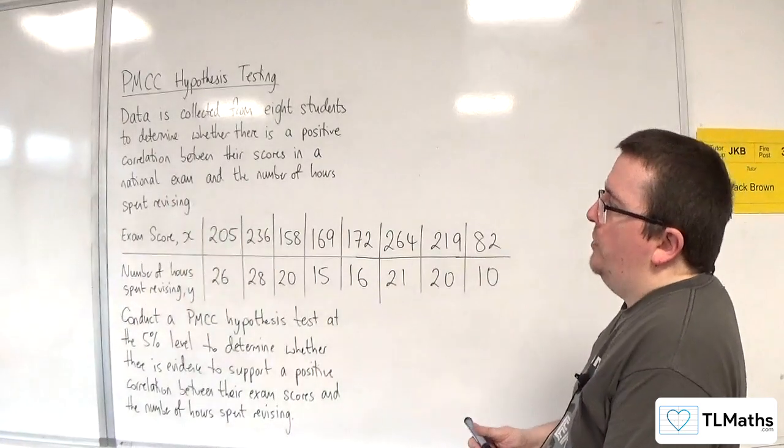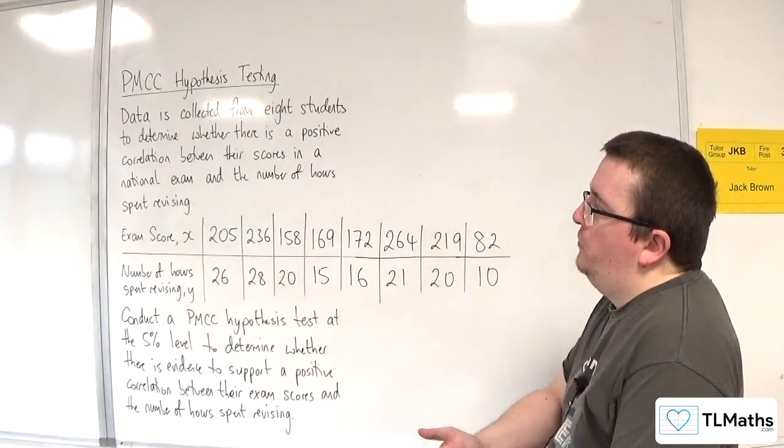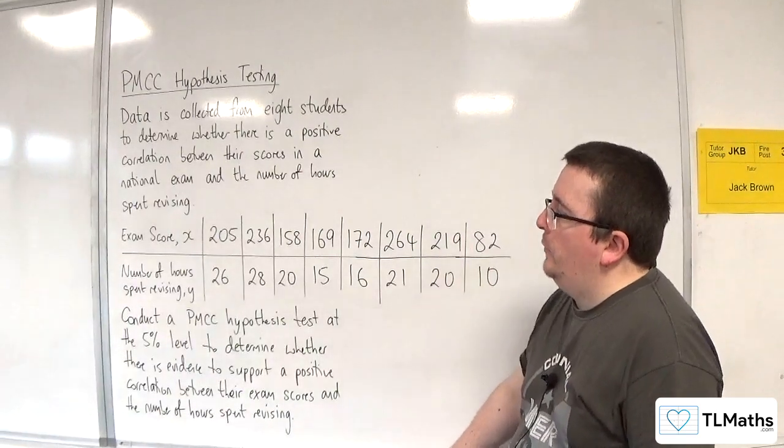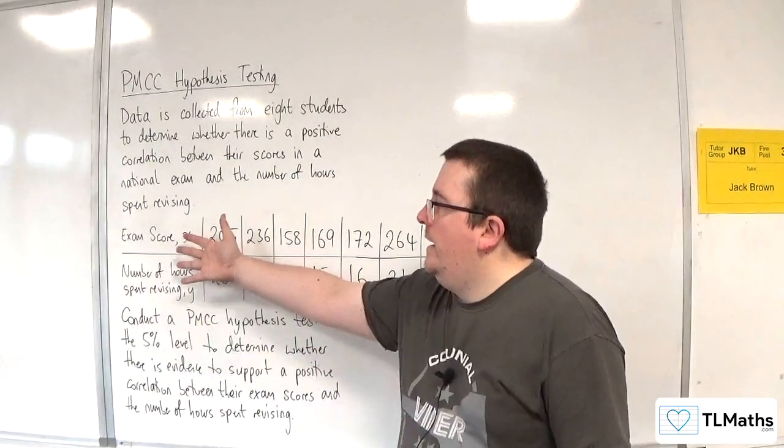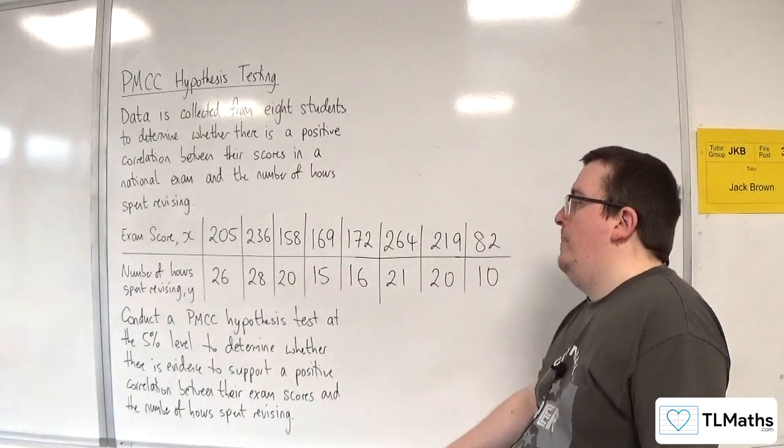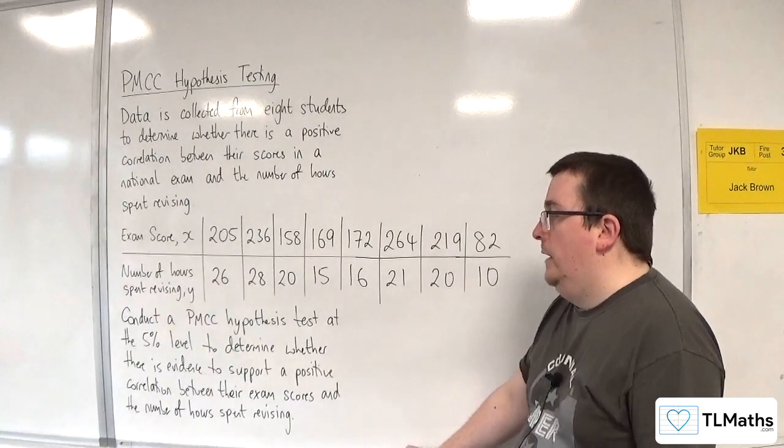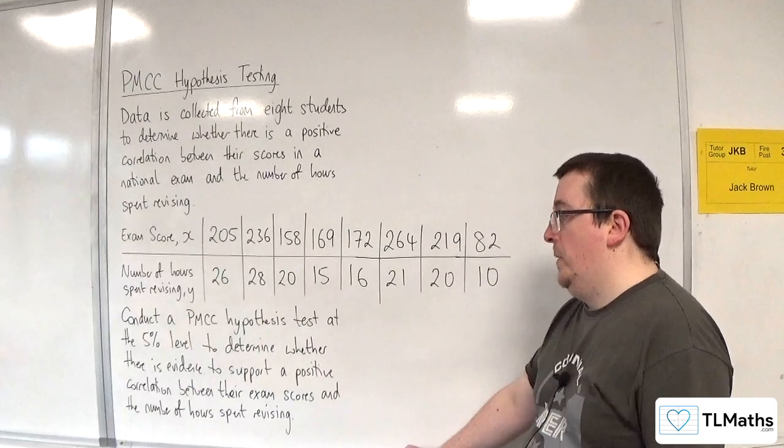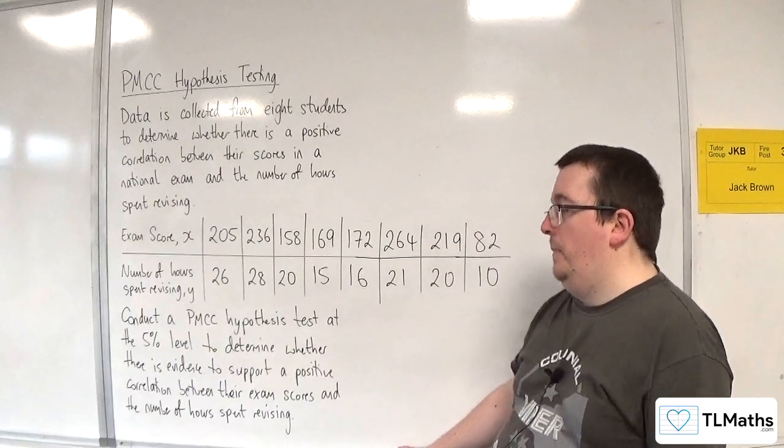Data is collected from eight students to determine whether there is a positive correlation between their scores in a national exam and the number of hours spent revising. So here we have the exam scores, the number of hours spent revising. Conduct a PMCC hypothesis test at the 5% level to determine whether there is evidence to support a positive correlation between their exam scores and the number of hours spent revising.